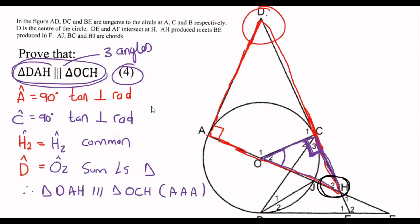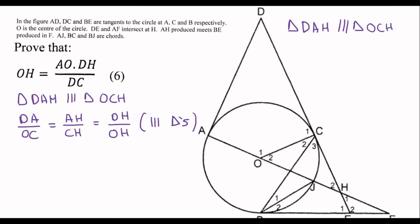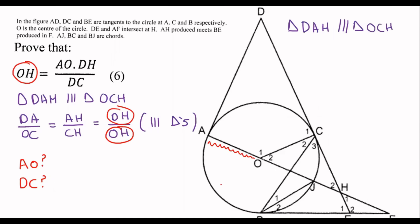I should have noted that angle A equals angle C. Now, we circle whatever they're asking in the question — they're asking for OH, for AO, for DH, and for DC. There is no AO or DC directly, but notice that AO is a radius, so AO equals OC because they are radii. That means I can replace OC in the ratio with AO, giving DA over AO equals AH over CH equals DH over OH.